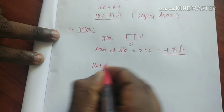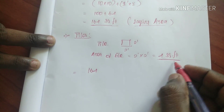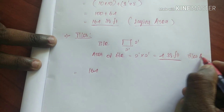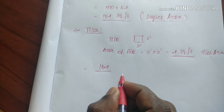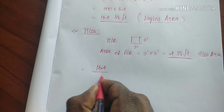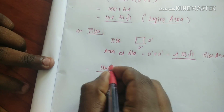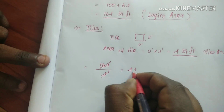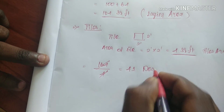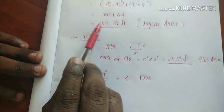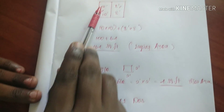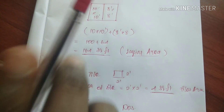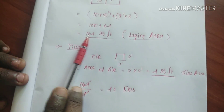The total tile laying area divided by tile area: 164 divided by 4 equals 41. So we need 41 tiles.